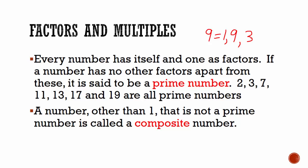Composite numbers are any number other than 1 that is not a prime number. So, as we defined above, 9 is an example of a composite number.